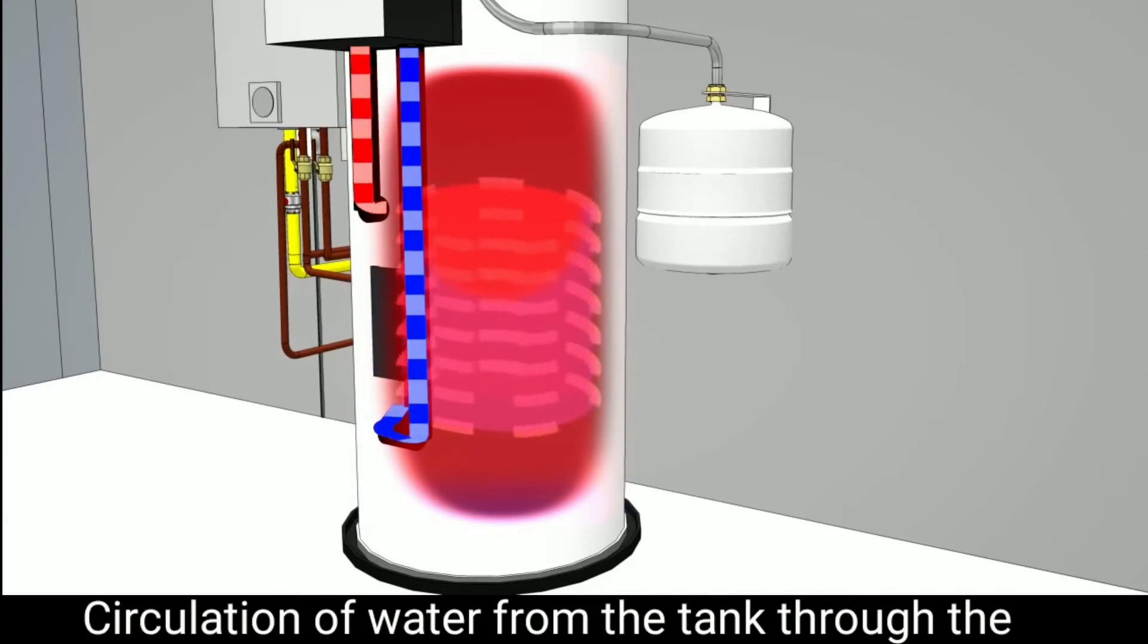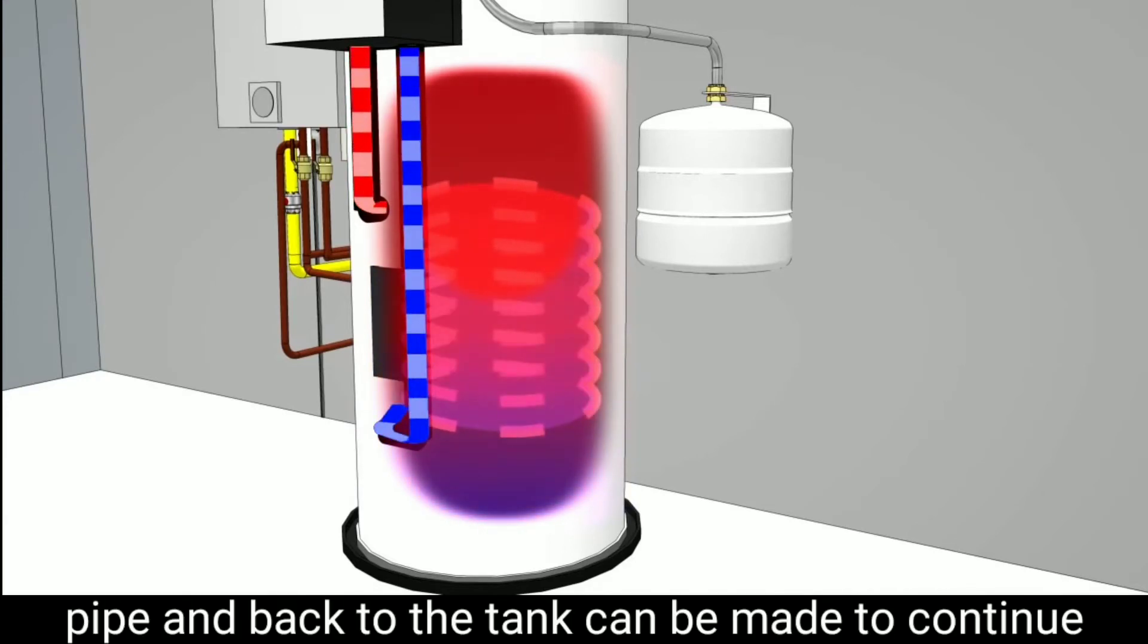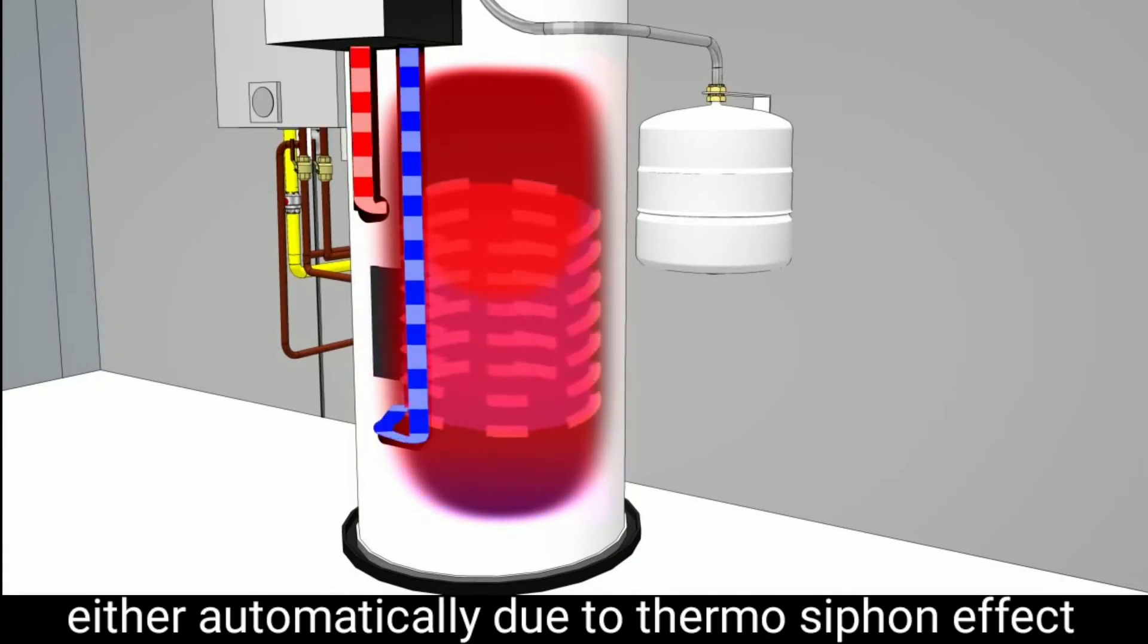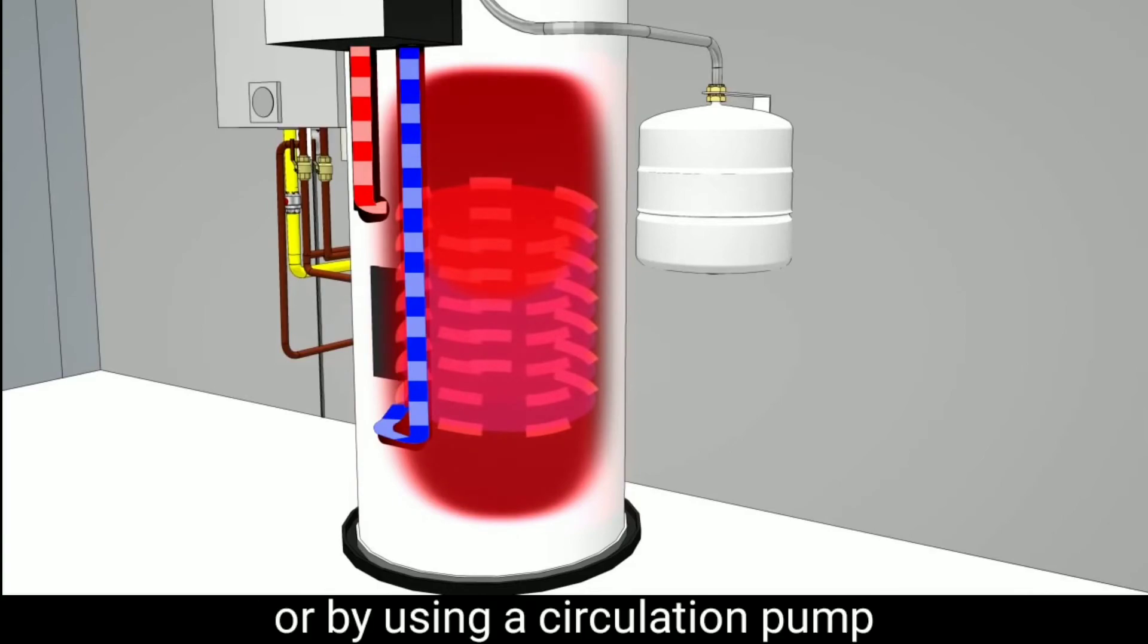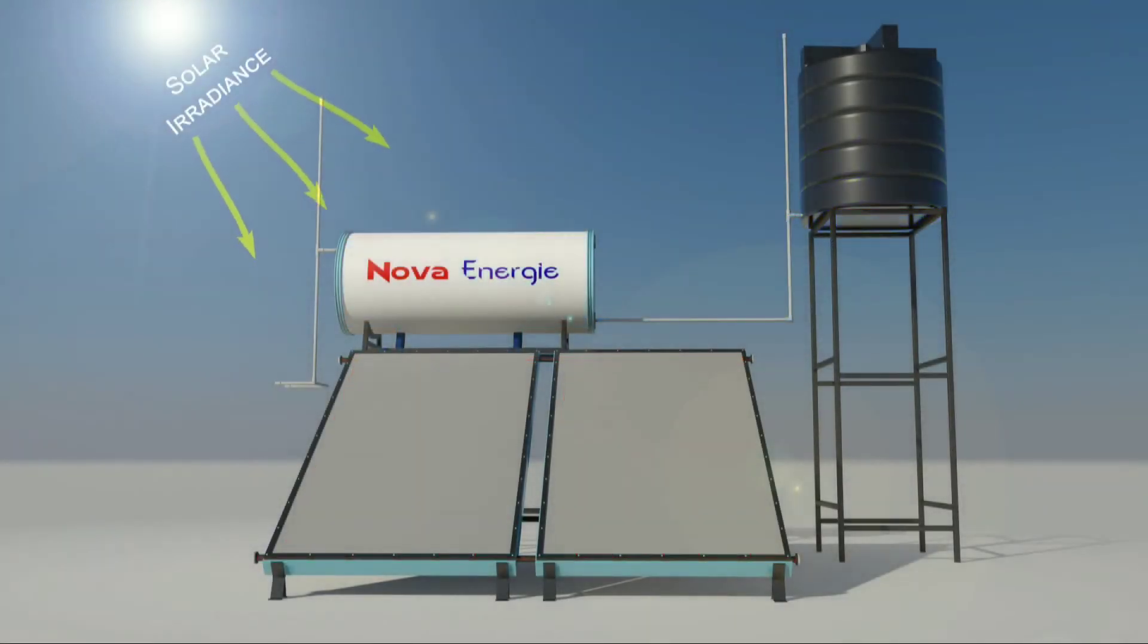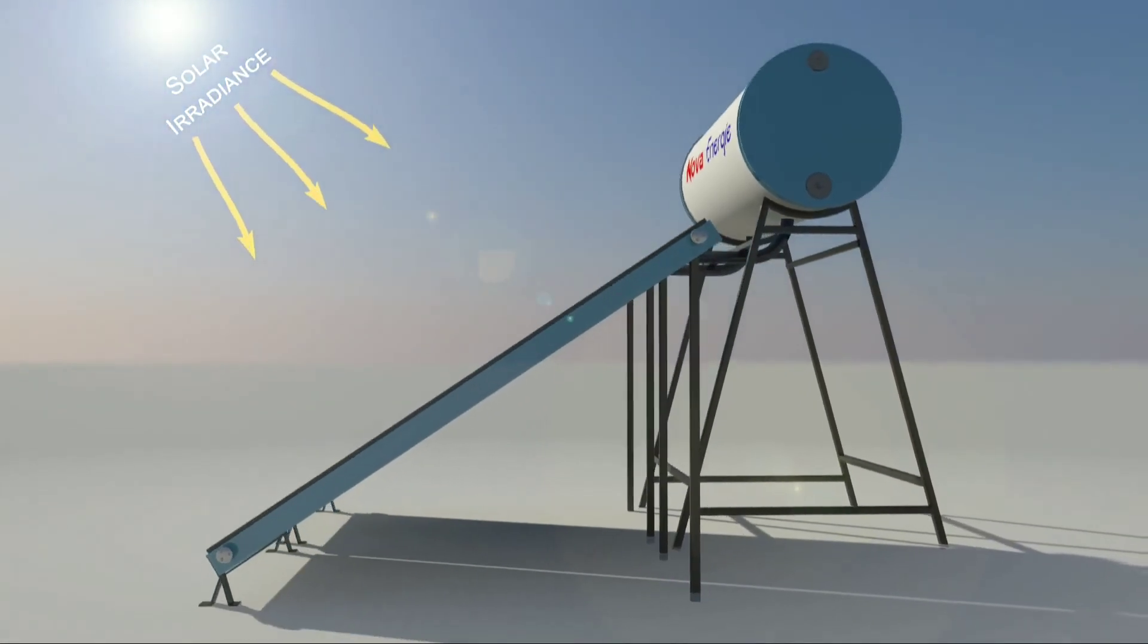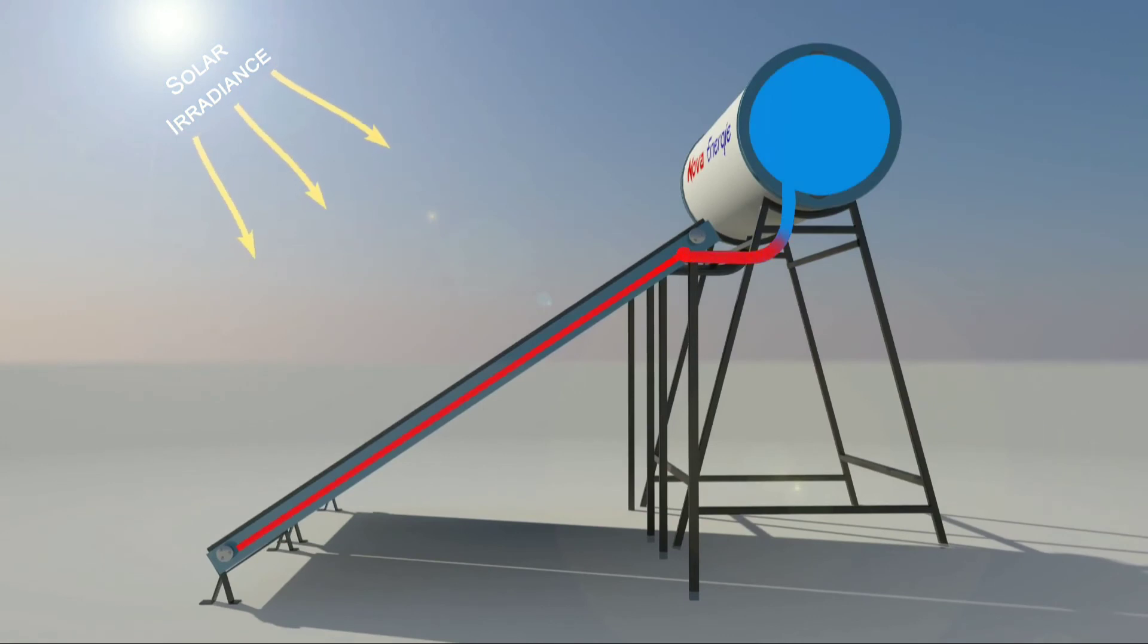The circulation of water from the tank through the pipe and back to the tank can continue either automatically due to thermosiphon effect or by using a circulation pump.